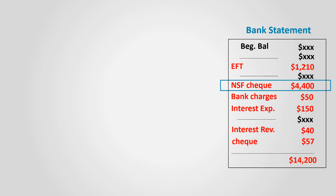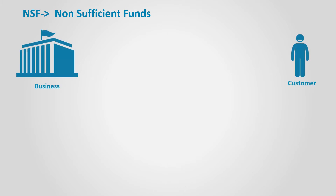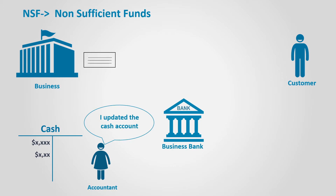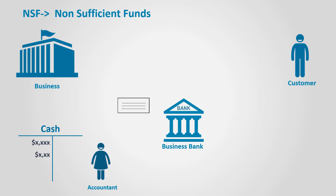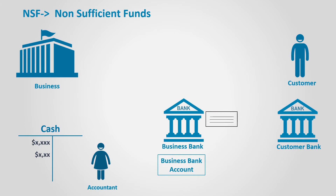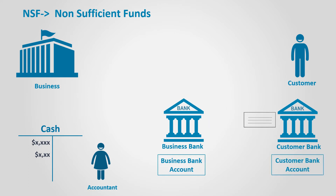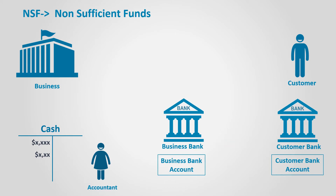Non-Sufficient Funds, or NSF. Assume that a business receives a check from a customer. The accountant adds it to the cash balance by debiting the cash account and deposits the check in the bank. The bank attempts to collect the check from the customer's account, but the balance is not sufficient. The bank deducts the amount from the business bank account and reports it as an NSF check. The accountant knows this information only when the bank statement is received, and hence the cash balance in the books is not updated.